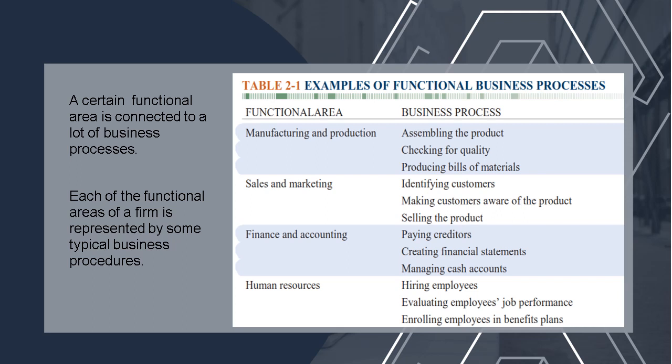For example, in the Manufacturing and Production Division, the business processes include assembling the product, checking the quality, and product bills of materials. In Sales and Marketing, processes include identifying customers, making customers aware of the product, and selling the product. In Finance and Accounting, processes include paying creditors, creating financial statements, and managing cash accounts. And for Human Resources: hiring employees, evaluating employees' job performance, and enrolling employees in benefit plans.